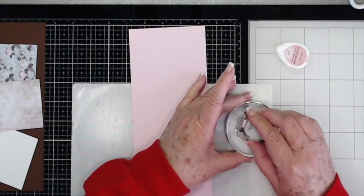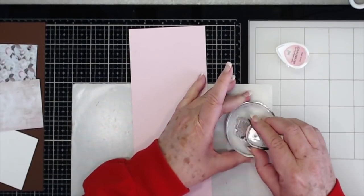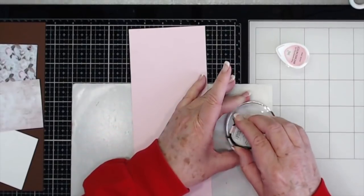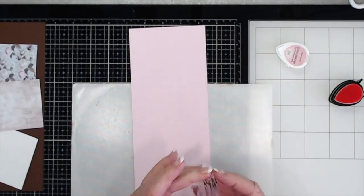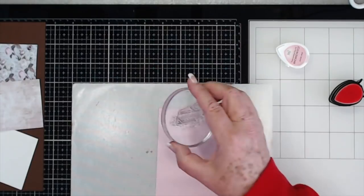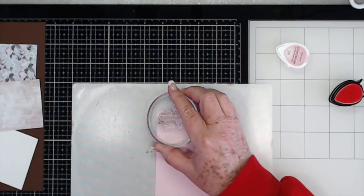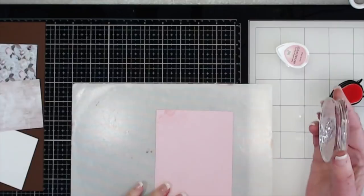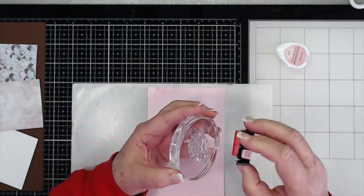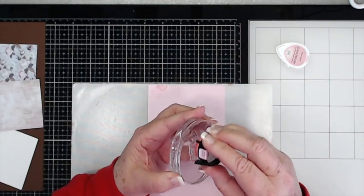I'm going to stamp up just a little bit on my card base, so I'm just going to do a little bit of tone on tone stamping, just a faint stamp on there. I don't want anything bold.